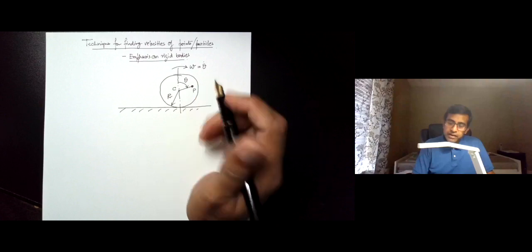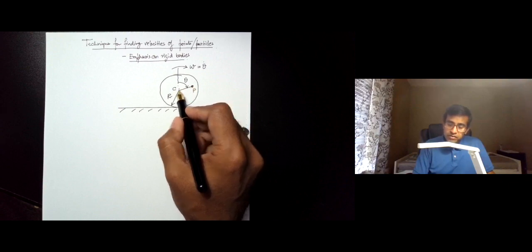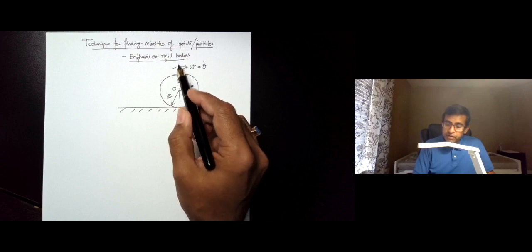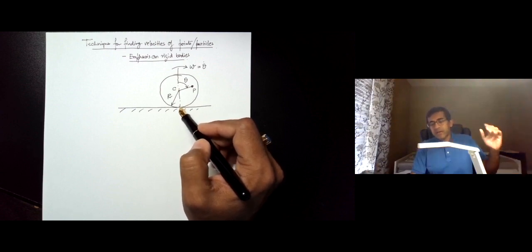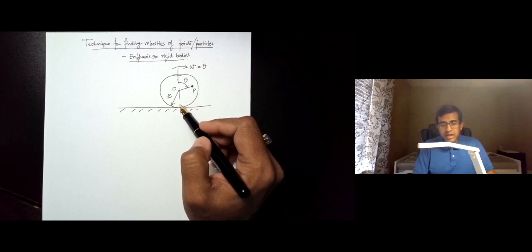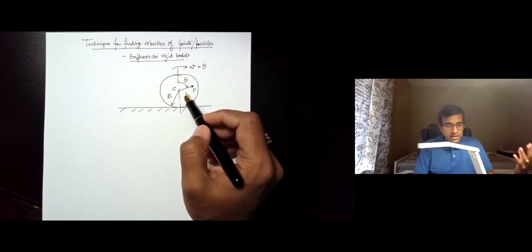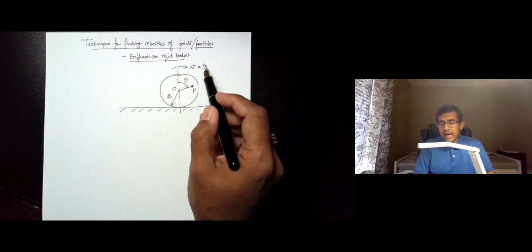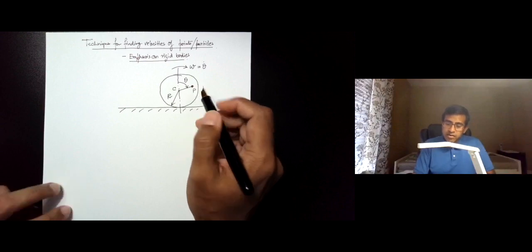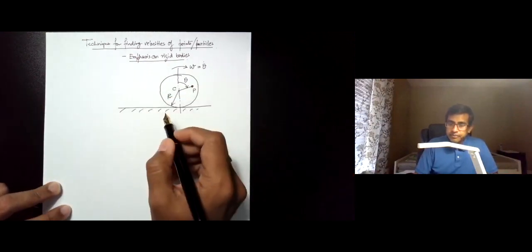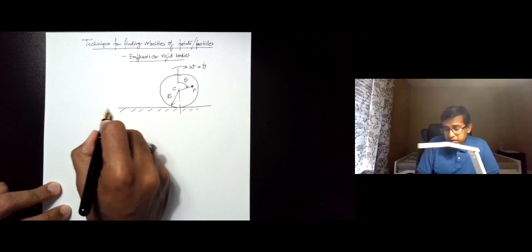Theta represents the orientation of P with respect to C within the context of a fixed reference direction, so theta dot is the angular velocity of the rigid body. At a particular instant this disk has angular velocity omega and is moving in the horizontal direction. We denote the horizontal direction as capital X and the vertical direction as capital Y, with a fixed reference frame at point O.